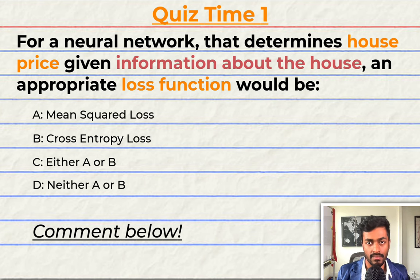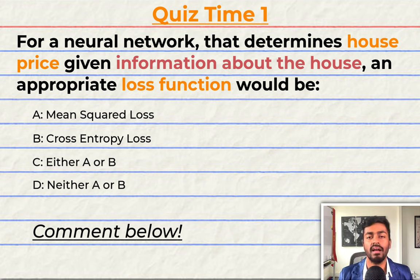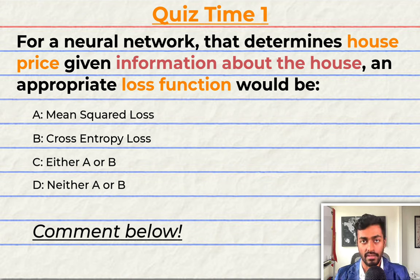Have you been paying attention? Let's quiz you to find out. For a neural network that determines house price given information about the house, an appropriate loss function would be A. The mean squared loss, B. The cross entropy loss, C. Either of the above, or D. Neither of the above. Comment your answer down below and let's have a discussion.